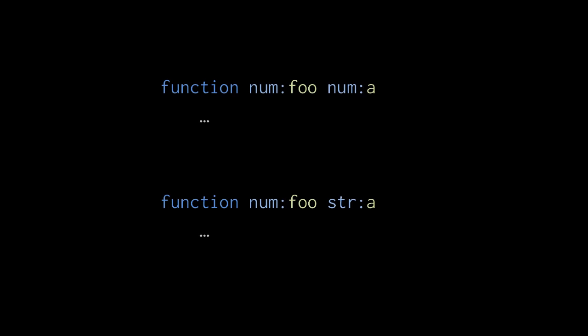For example, to make a function foo that accepts either one number argument or one string argument, we actually create two separate versions of foo, one with a single number parameter and one with a single string parameter.